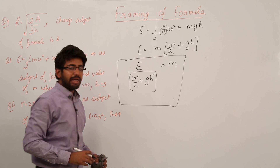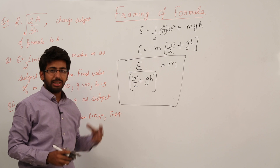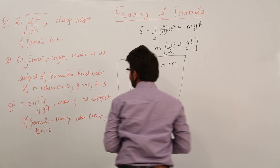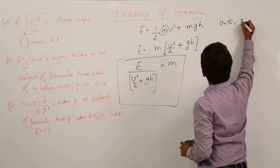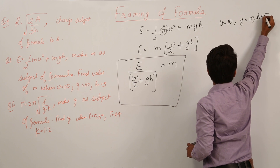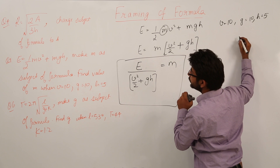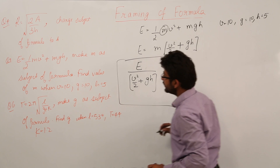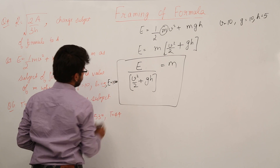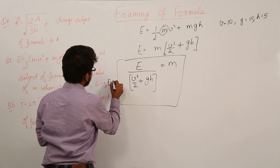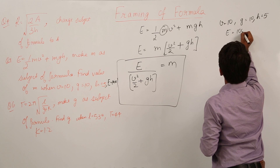This is the desired formula in which m is the subject and all other variables are on the other side of the equality sign. For the second part, we have v equals 10, g equals 10, and h equals 5. Since e is missing, let us assume e equals 1000.